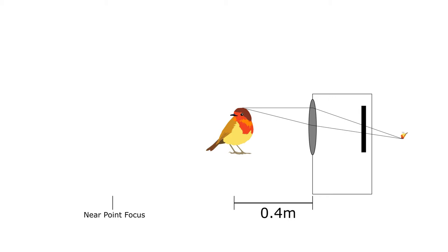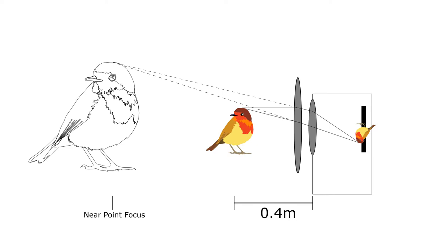To fix this, we want to add a corrective lens in front of the camera such that the light focuses onto the sensor again. To the camera, it now looks like there is a large bird at the near point focus. The large bird is referred to as the image, and the original bird is the object.